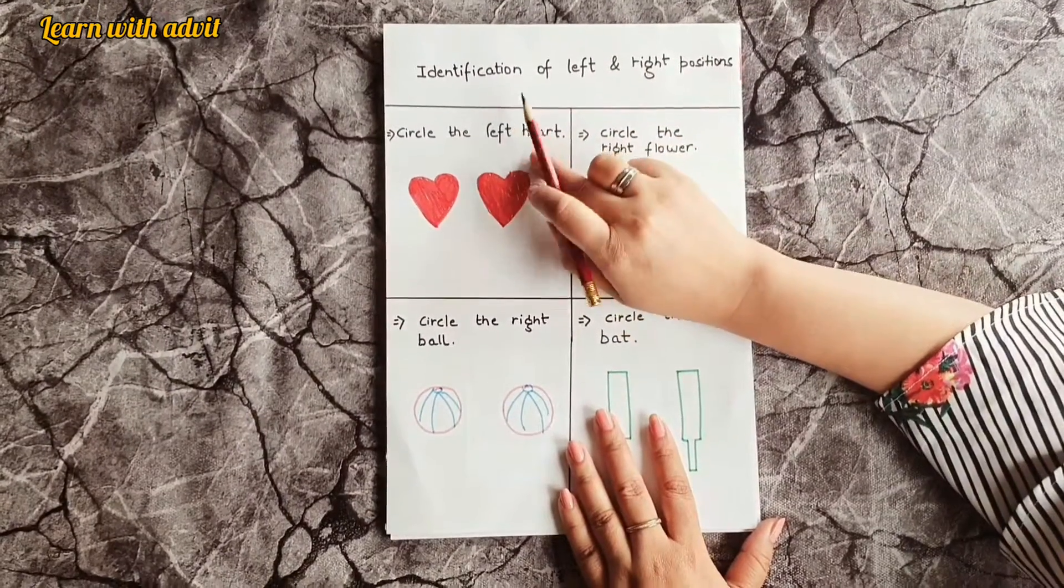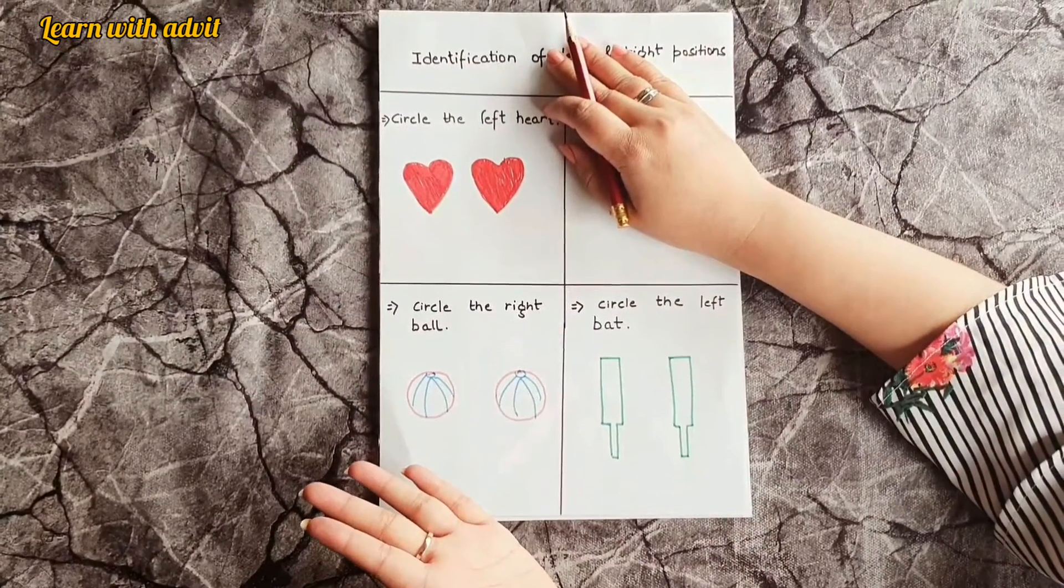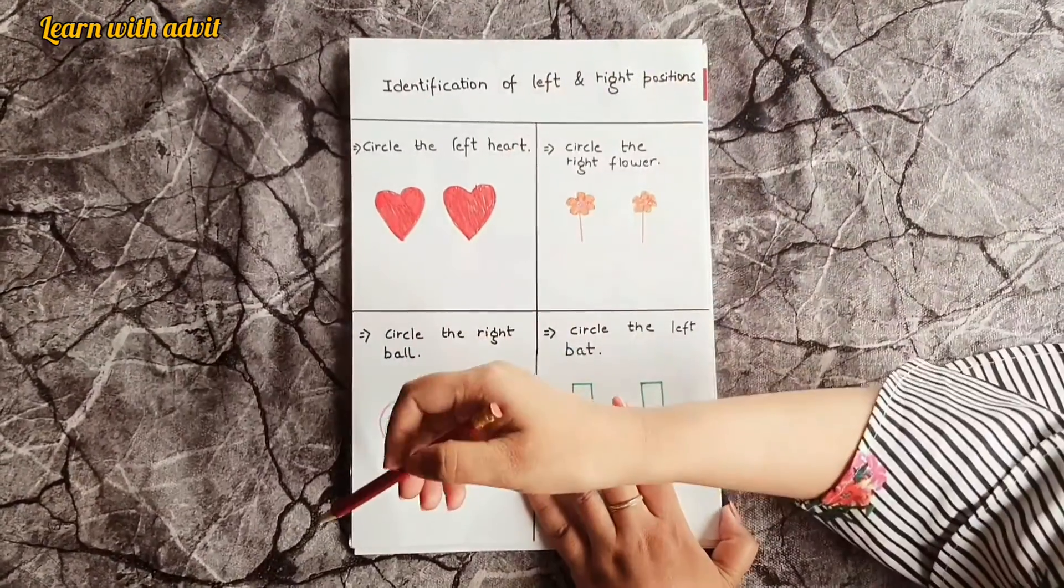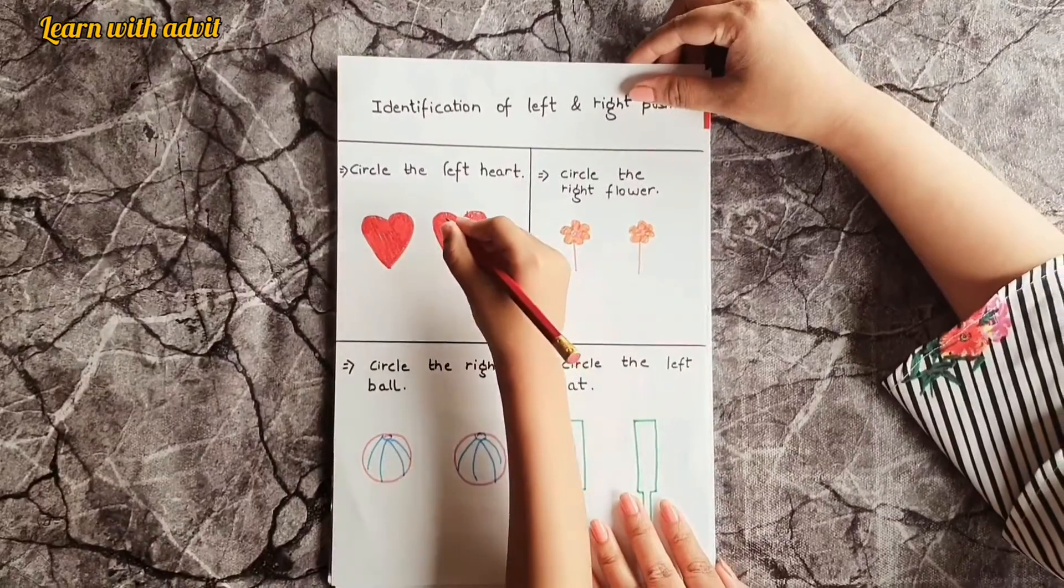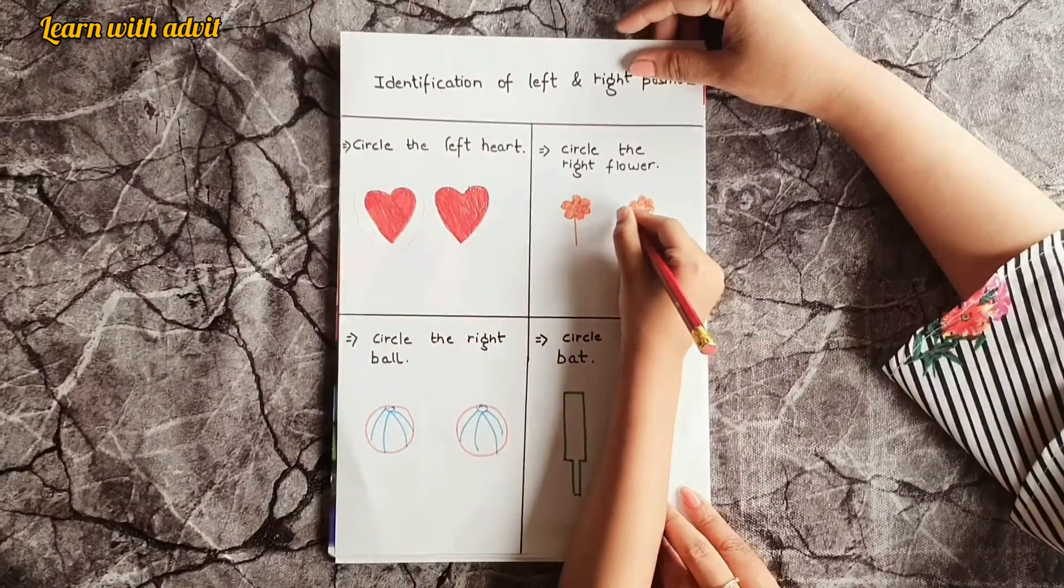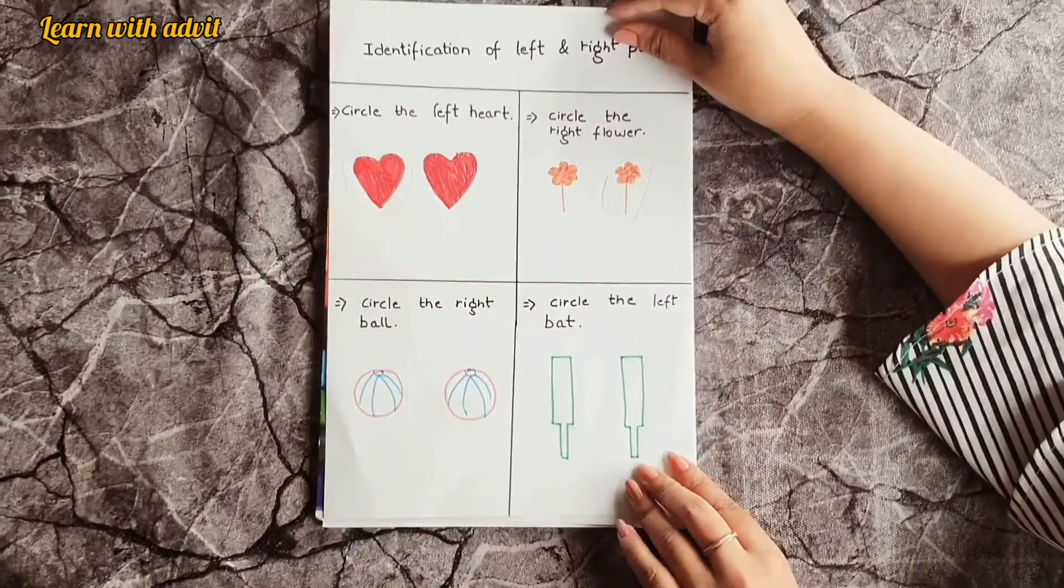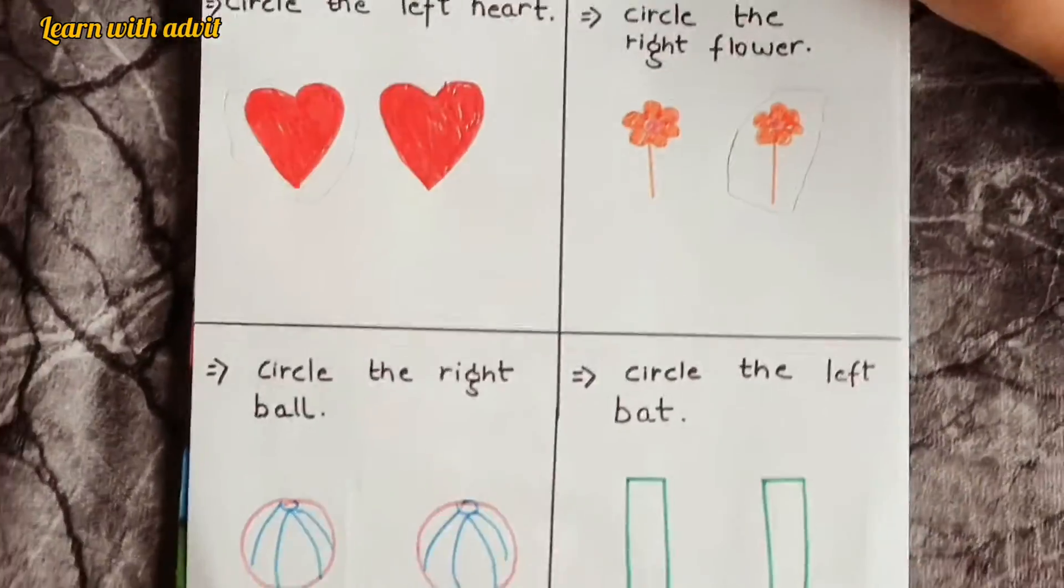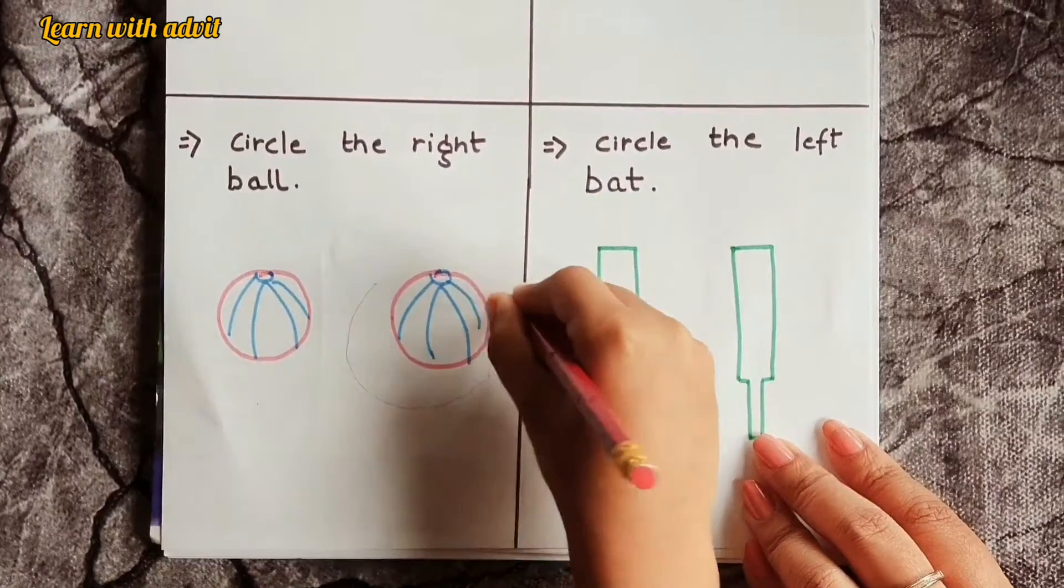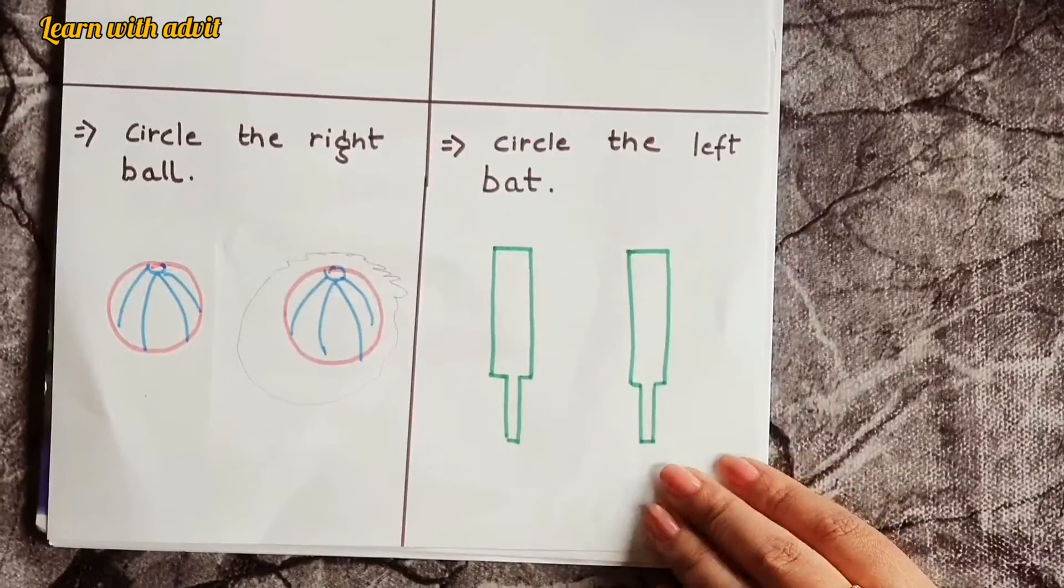And this sheet, what you have to do - the sheet is about identification of left and right position. So you know left hand side is left and the right hand side is right. So circle the left heart. Circle the right flower. I'm going to do a box, but you don't have to make box, just circle. Circle the right ball. Very good. You have to follow the instruction, so only circle it. Circle the left pet.